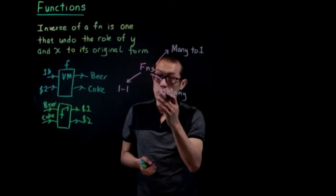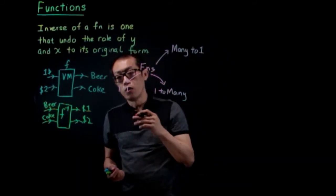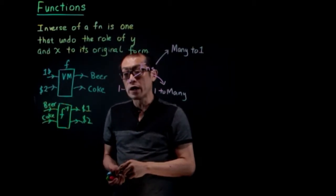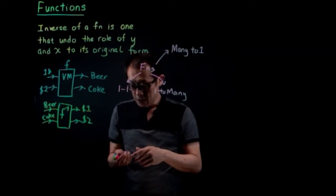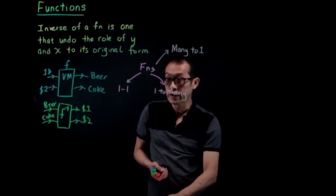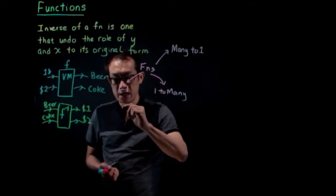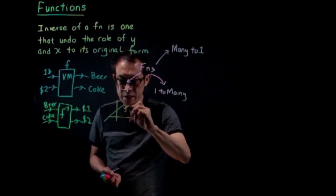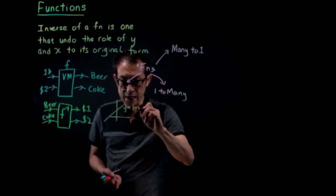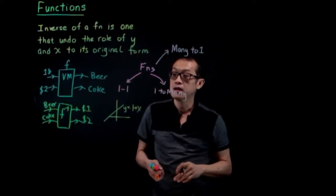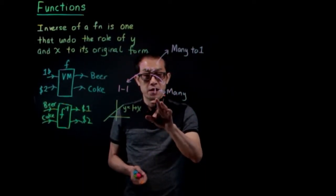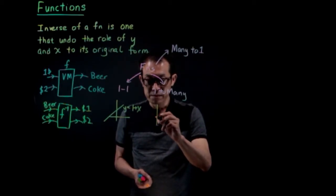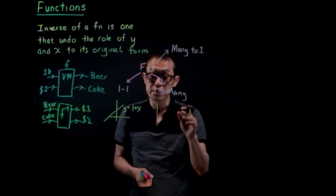What is a one-to-one function? A one-to-one function is one where one input gives one output. Drawn graphically, an example would be a line — for instance, y equals 1 plus x. This is a one-to-one function.